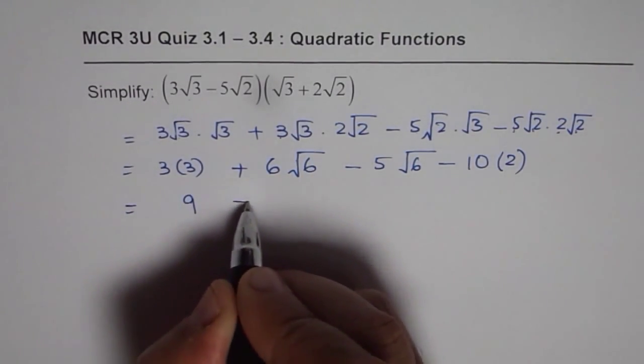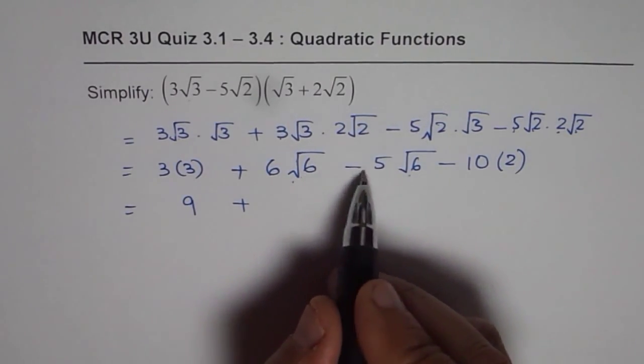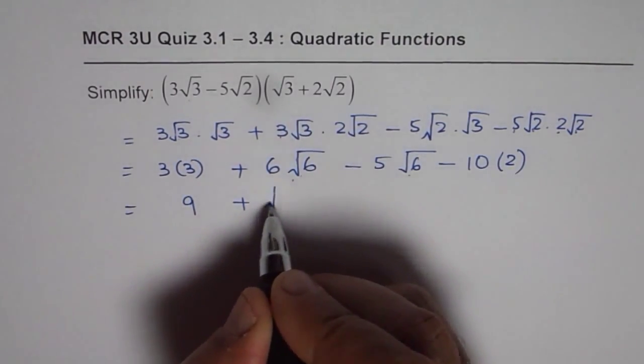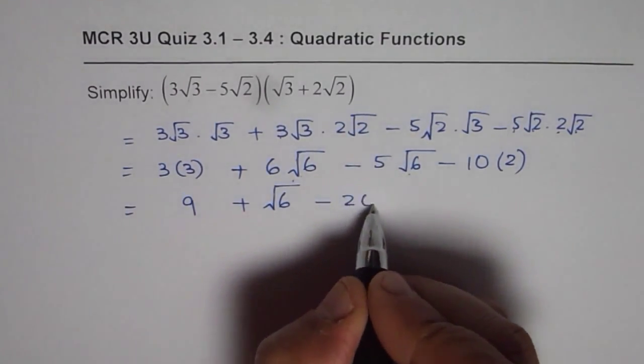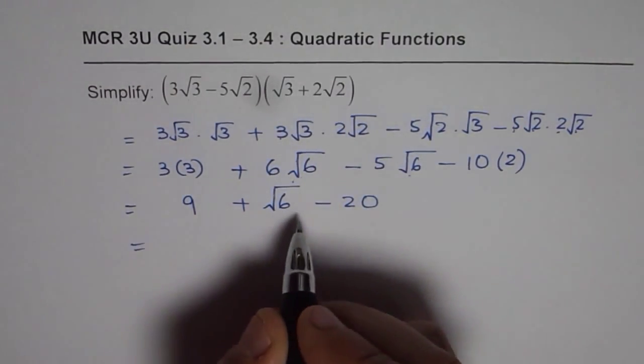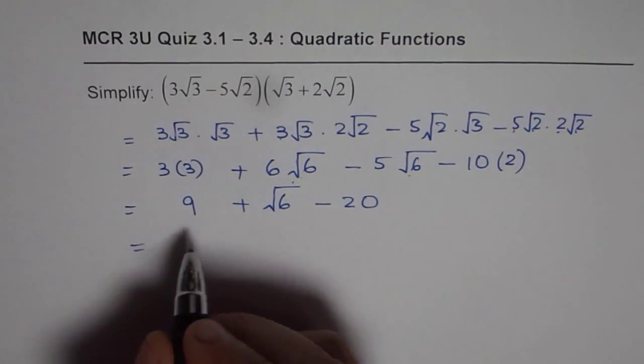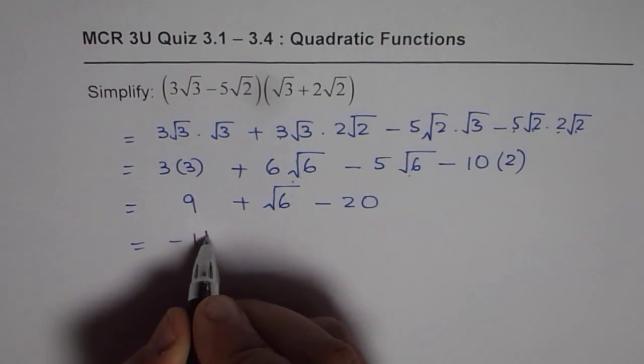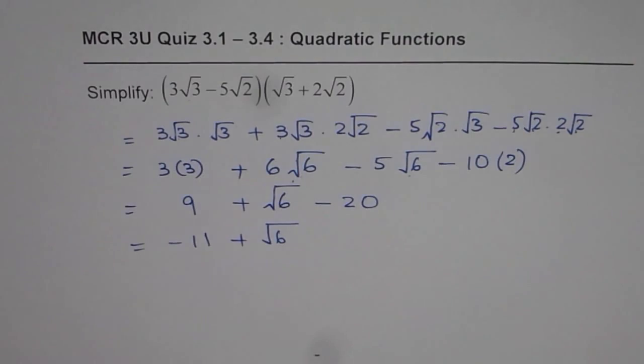3 times 3 is 9 plus. We can combine these terms. 6 square root 6 minus 5 square root 6 gives us square root 6, and we have minus 20. So we can now write this as 9 minus 20 as negative 11 plus square root of 6. That is how we can multiply them and simplify. I hope the steps are clear. Thank you and all the best.